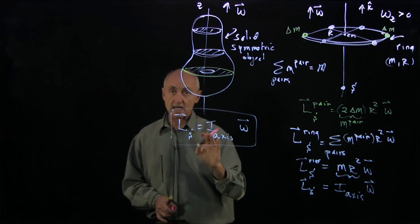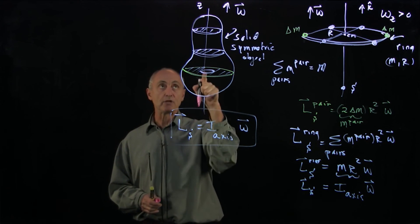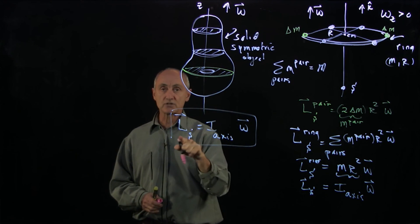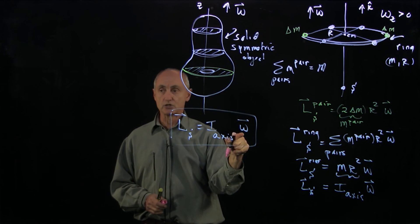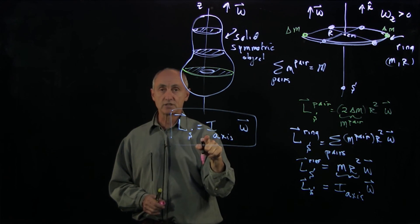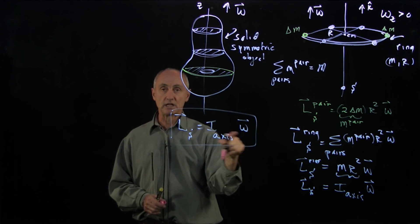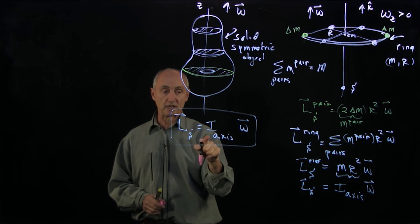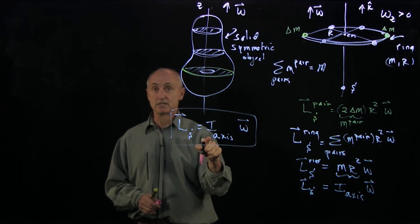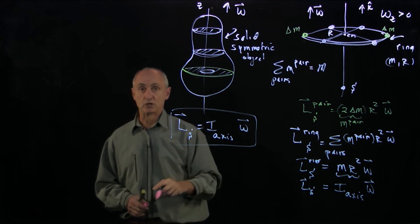So again, in conclusion, a symmetric object about the axis of rotation only has a component of L pointing in the direction of omega. The constant of proportionality between the angular momentum and the angular velocity is the moment of inertia about that axis. This we need to calculate for each symmetric object.